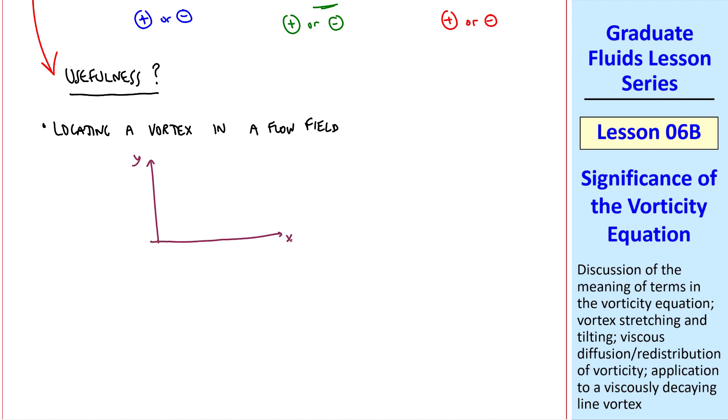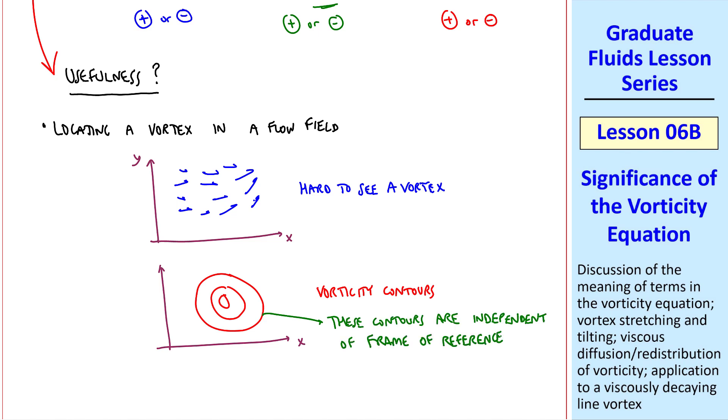We can use it for locating a vortex in a flow field. This is really an argument for the usefulness of vorticity itself, not really the vorticity equation. Consider a 2D flow in the XY plane, and either computationally or with PIV, you have some flow field, and you could measure the velocity at various locations. It's hard to see a vortex in a vector plot like this. However, if we plot vorticity contours, you may be able to see concentrations of vorticity. And what's even nicer is that these contours are independent of frame of reference. And we're restricting our argument to a frame of reference moving at a constant speed. If your frame of reference is moving at a different speed, the vector contours will change significantly. But these vorticity contours will remain the same whether you're sitting still or moving at some constant speed in any direction. The magnitude of vorticity is independent of frame of reference.